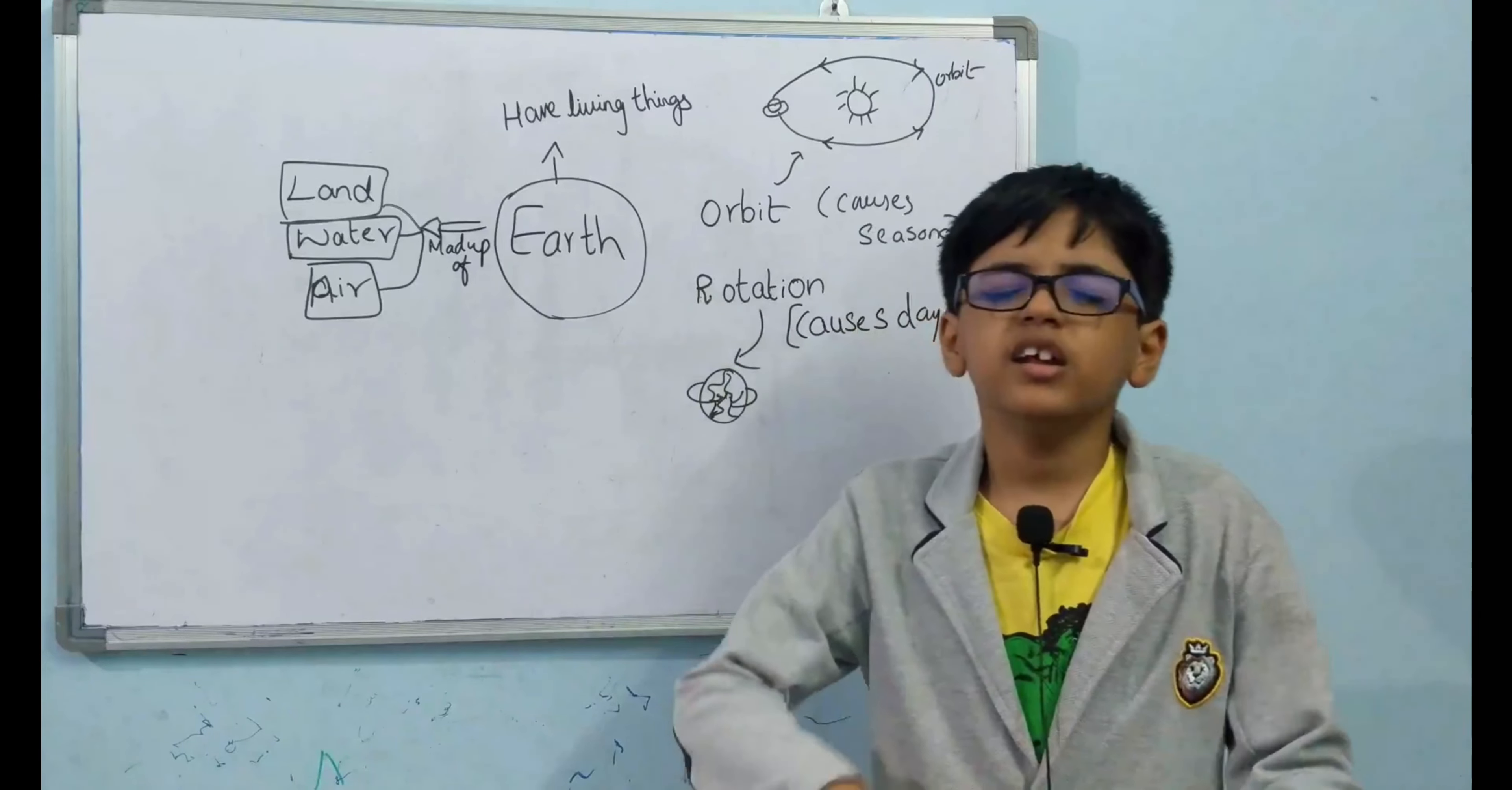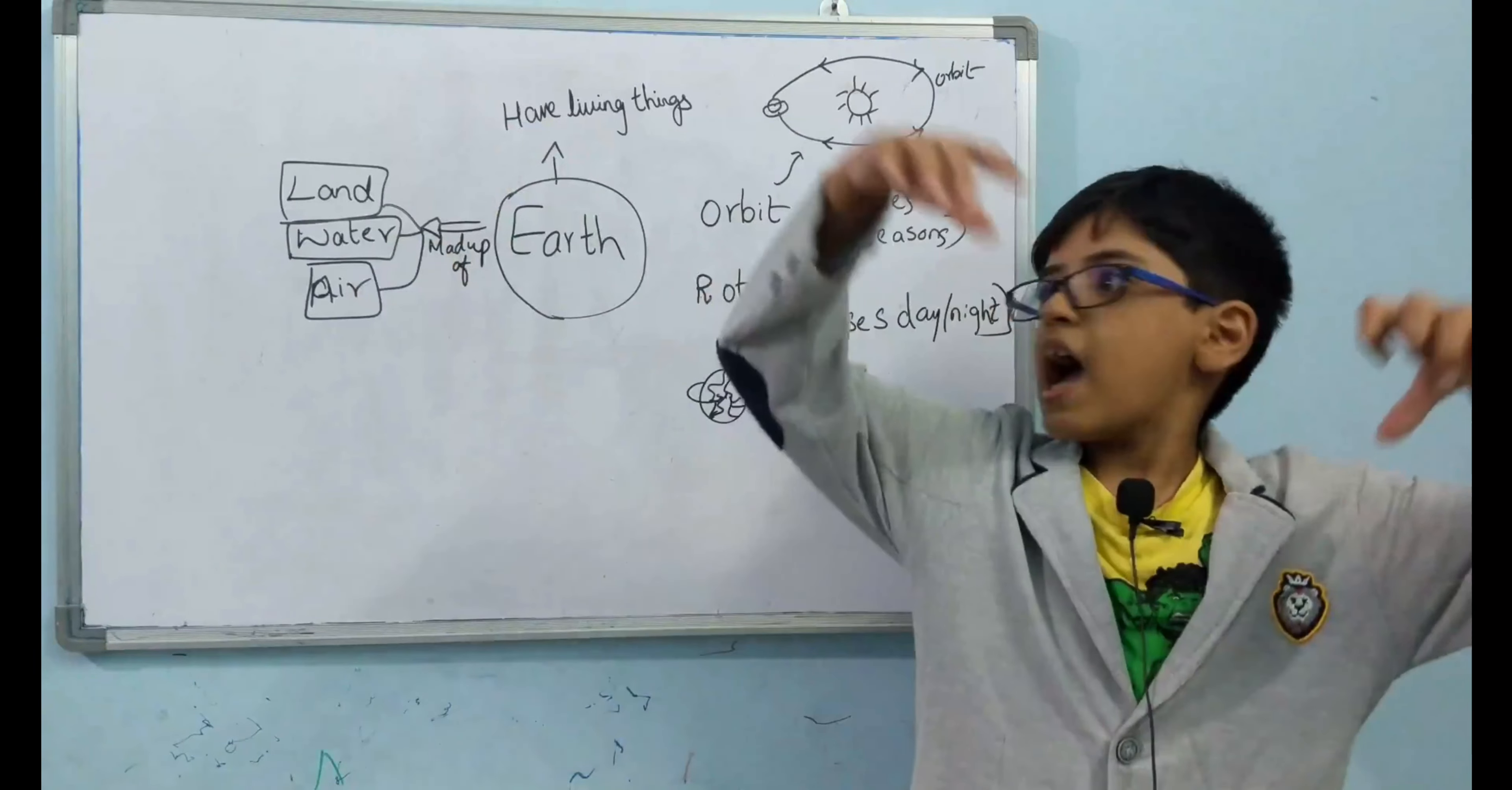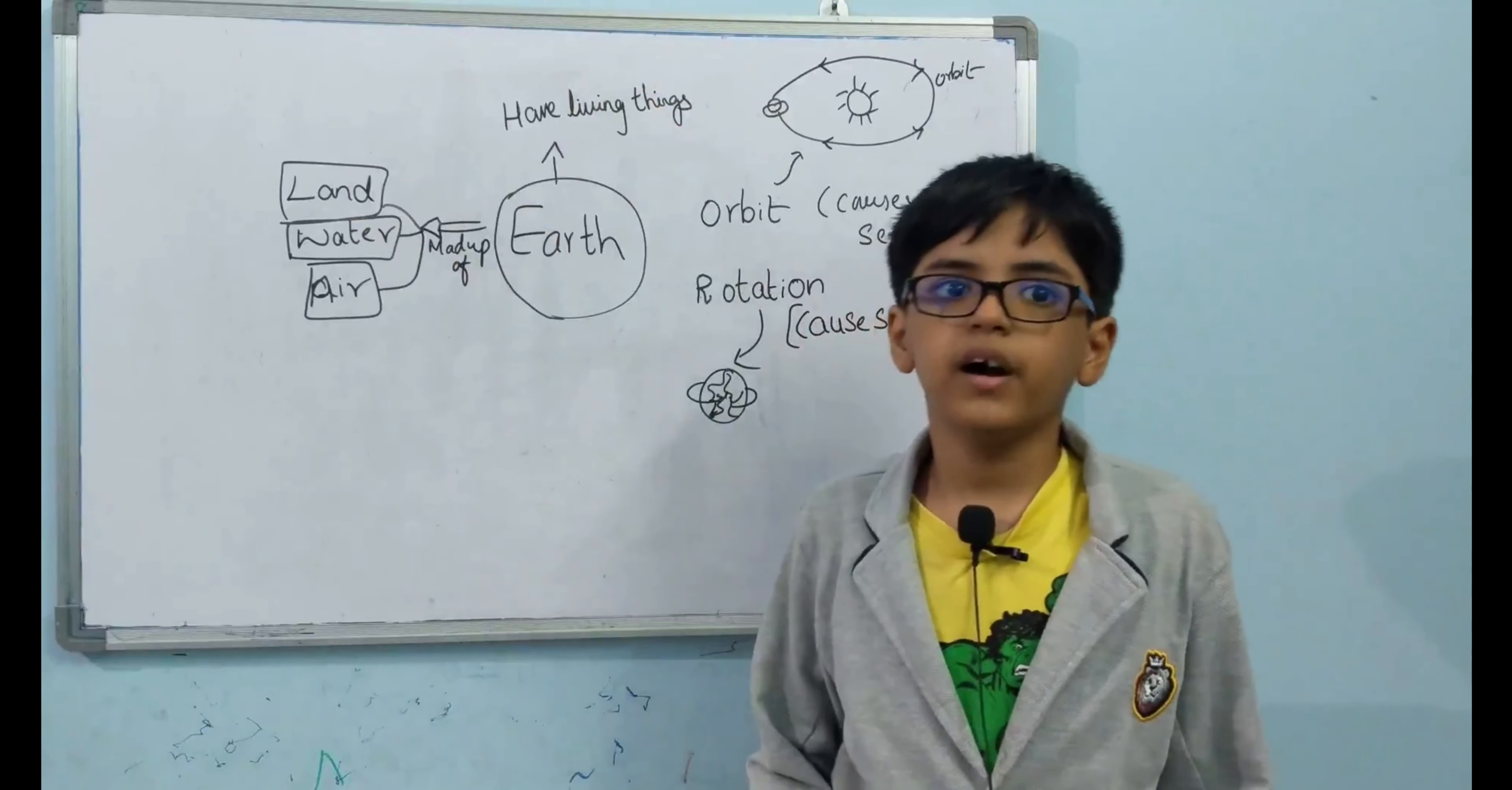Air is everywhere around us. But a layer of air surrounds the Earth and it forms what? Yes, you know all of you. It is called the atmosphere. The Earth receives light and heat from the sun.